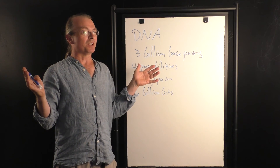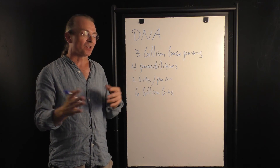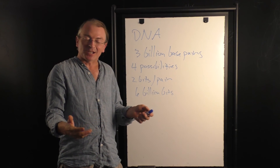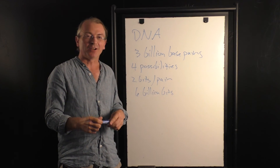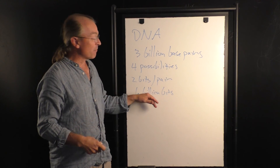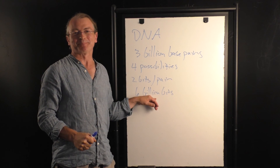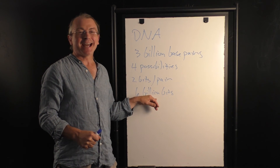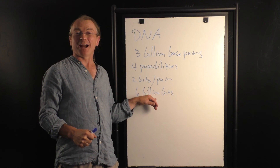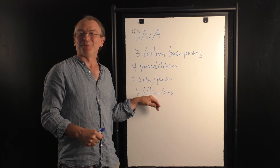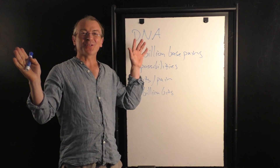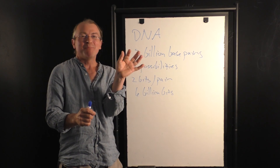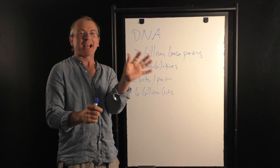Now of course most of these bits — the vast majority — are programming just elementary processes about chemical reactions in our cells. We share most of these bits with yeast. We share 99% of our bits with other primates like chimpanzees, and 99.8% of our bits with other human beings. But that extra little tiny bit makes the extra difference — the difference that makes a difference.